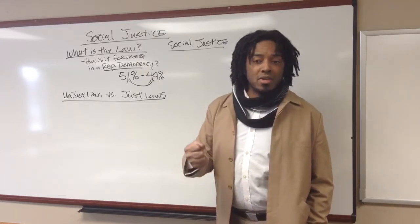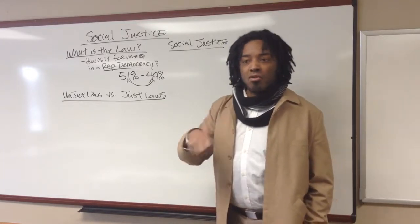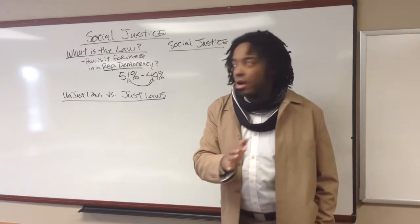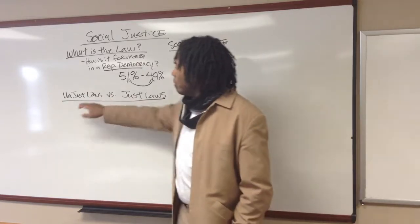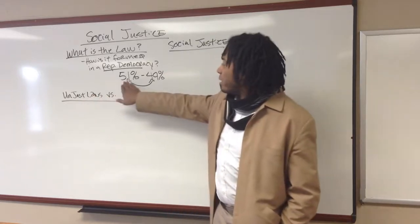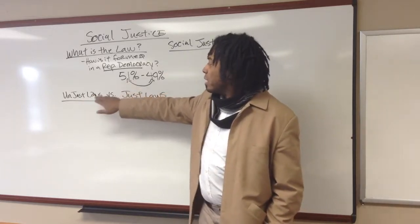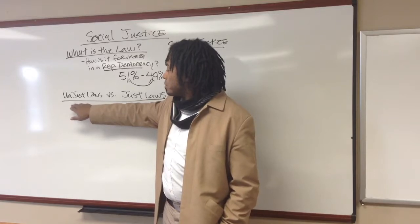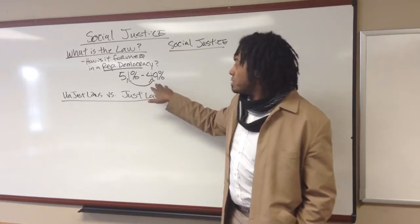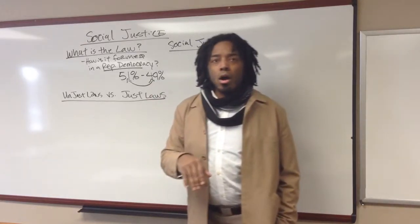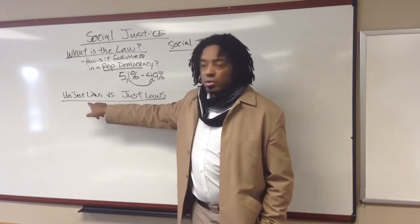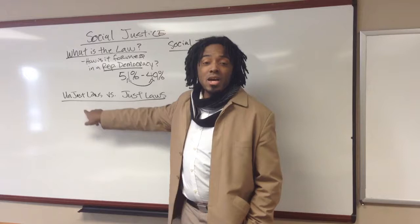Examples of unjust laws include Jim Crow as a form of government, separate but equal, and don't ask don't tell. These are examples of laws created by the 51% to the detriment of the 49% — to the detriment of the minority. There are things that are legal but unjust.